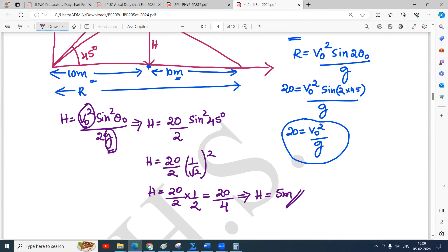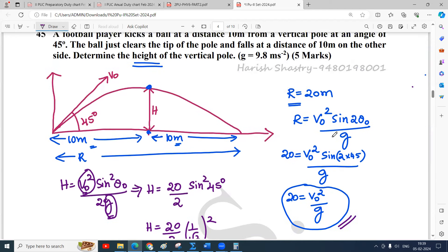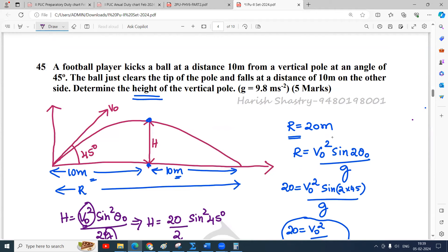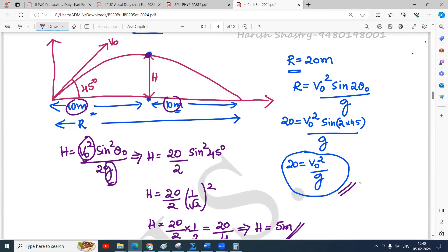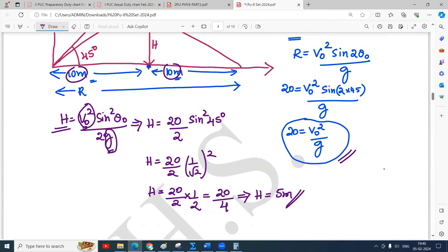From the given information, the range is given in a different way. The ball reaches the goal post after traveling 10 meters, clears it, and travels another 10 meters. This means the goal post is at the center, so the range is 20 meters total. Using that equation, we substituted the required values to find the height. Very simple problem. Thank you.